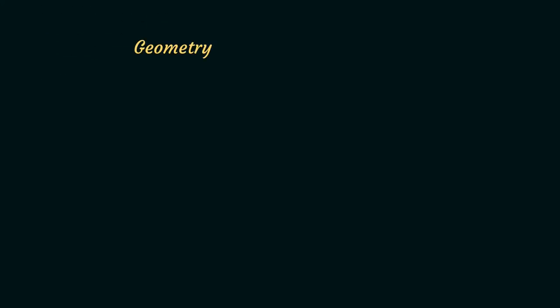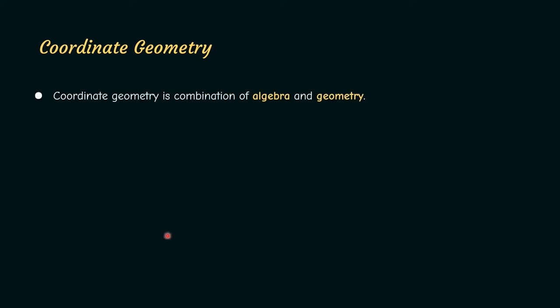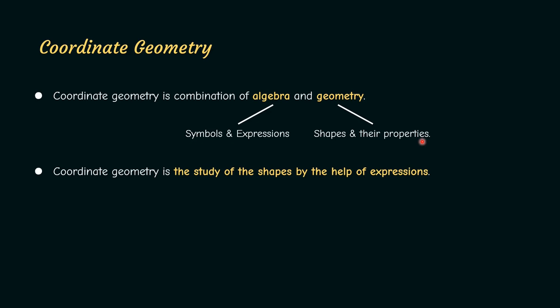We may already know about geometry, but what is coordinate geometry? Coordinate geometry is basically a combination of algebra and geometry. Algebra deals with symbols and expressions like x, y, 2x plus 3, etc. Whereas geometry deals with shapes and their properties like lines, circles, triangles, etc. The study of these shapes by the help of expressions is called coordinate geometry.